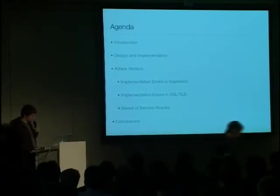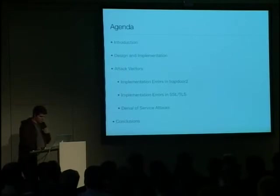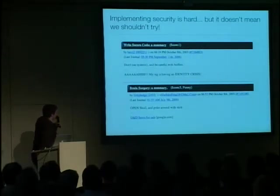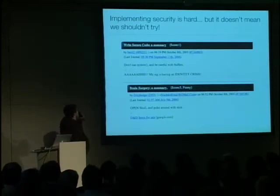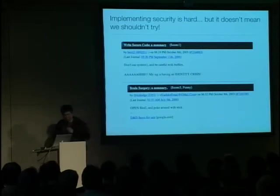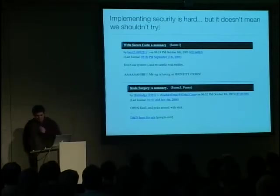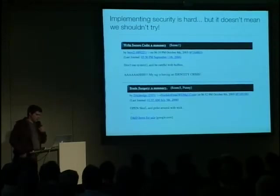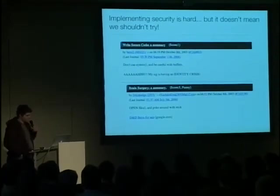And some conclusions we can draw from it. As an introduction, a very simplifying view on writing secure code: "Write secure code" — summary: don't use system and be careful with buffers. And then an answer on Slashdot: "Brain surgery" — summary: open skull and poke around with stick. So a more sophisticated view on security issues is definitely required, and this summary doesn't even scratch the surface.